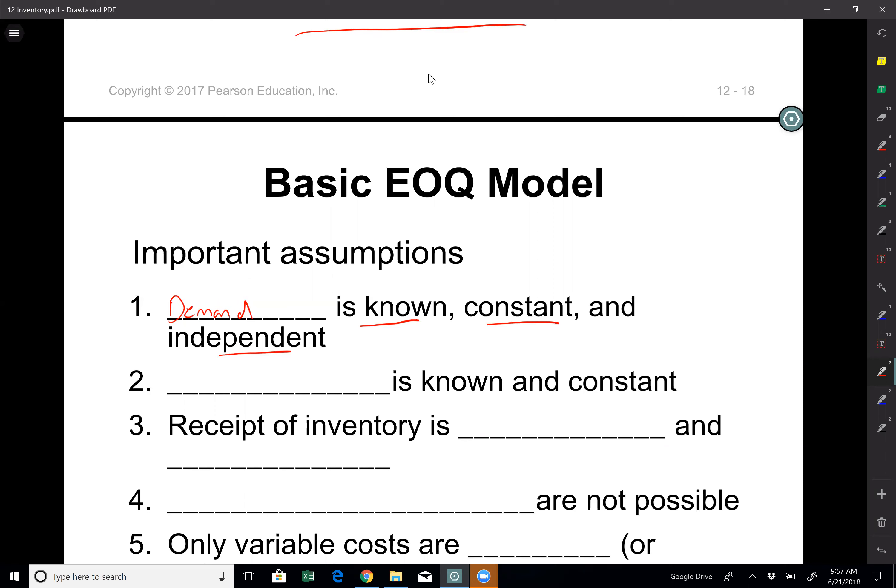Two, the lead time is known and constant and again this is another assumption that may not be realistic because I know that when I order products it takes sometimes half a day, sometimes two days, sometimes three days.